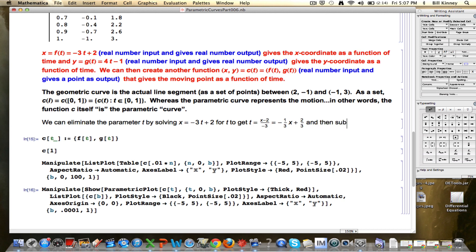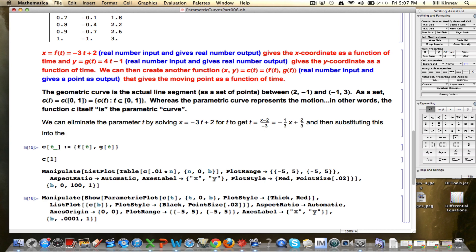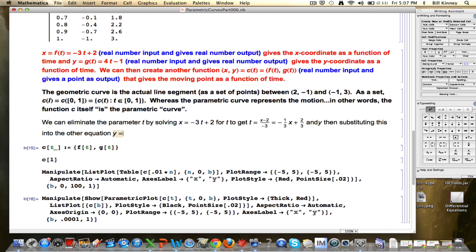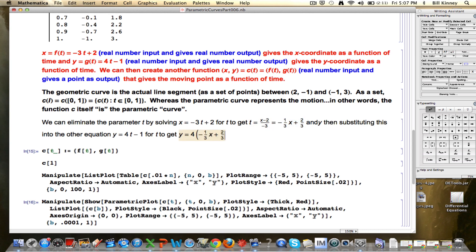And then substituting this into the other equation, y equals... let's see here, y equals 4t - 1. Now I'm going to replace this entire t with this entire thing here, copy and paste, and then simplify.